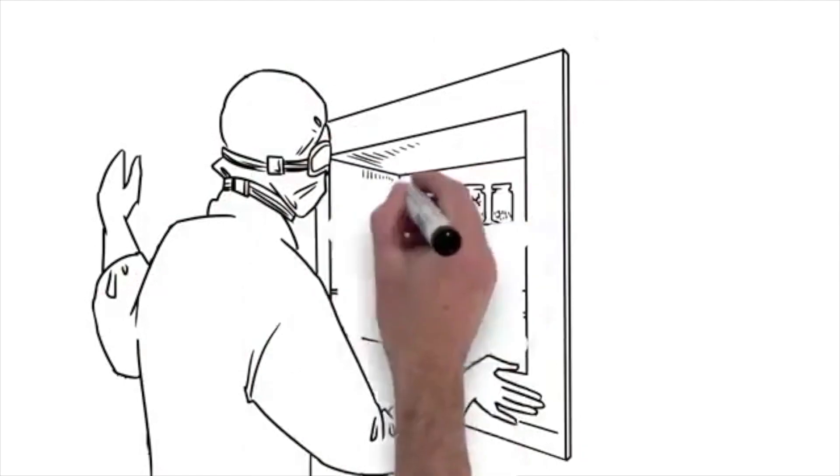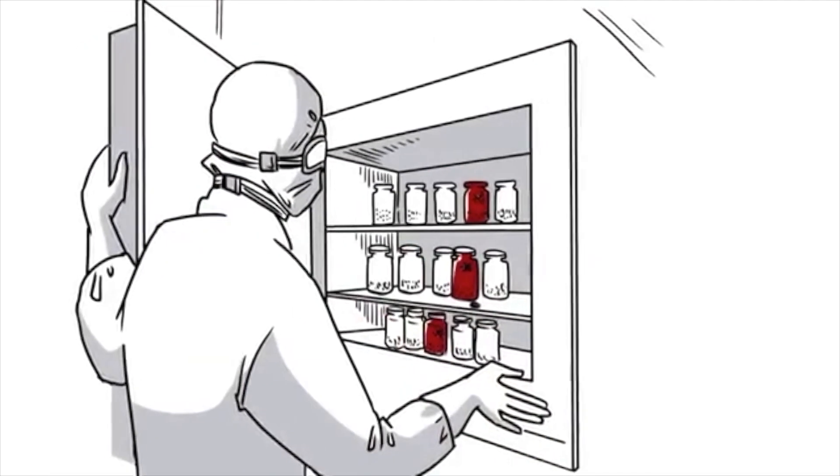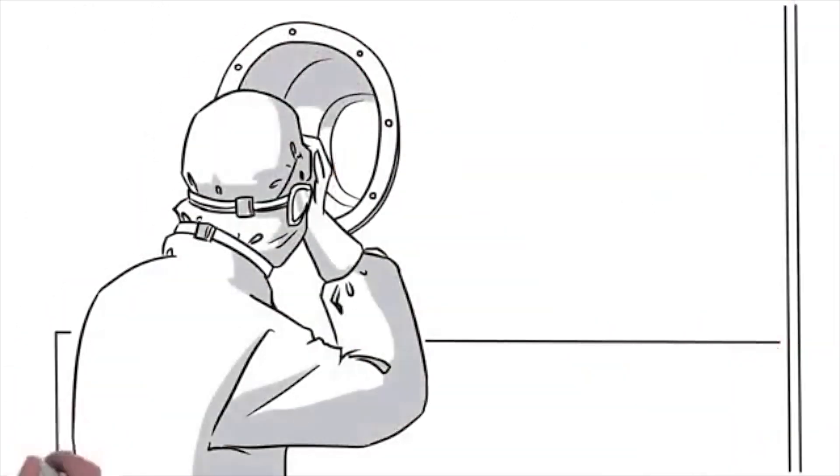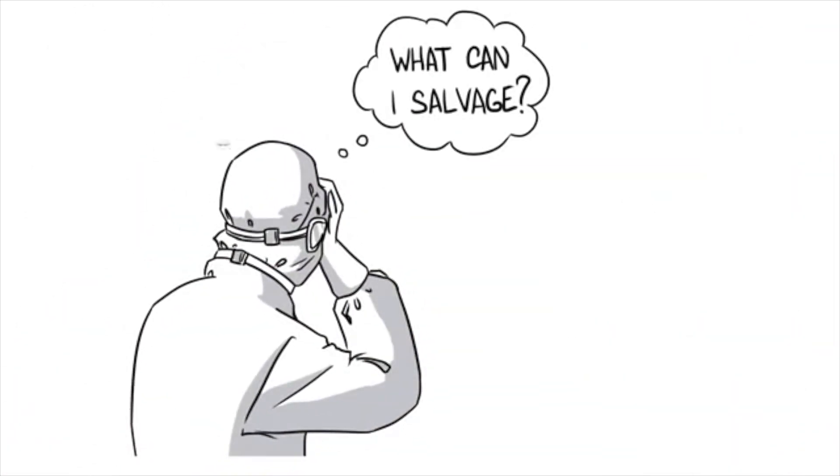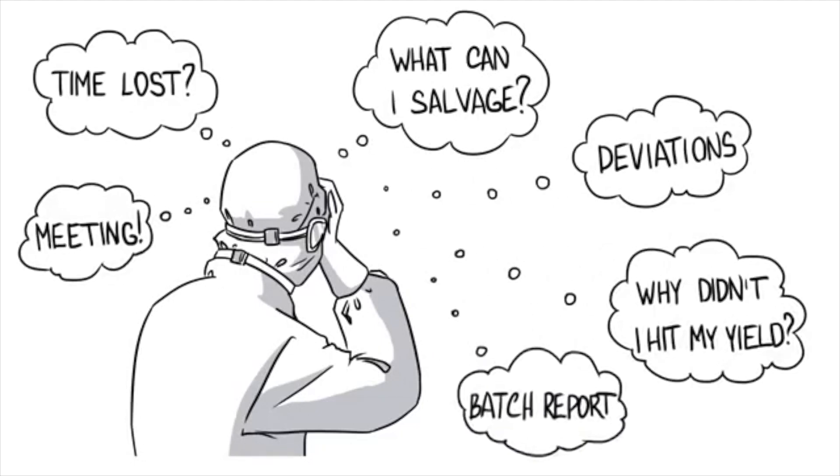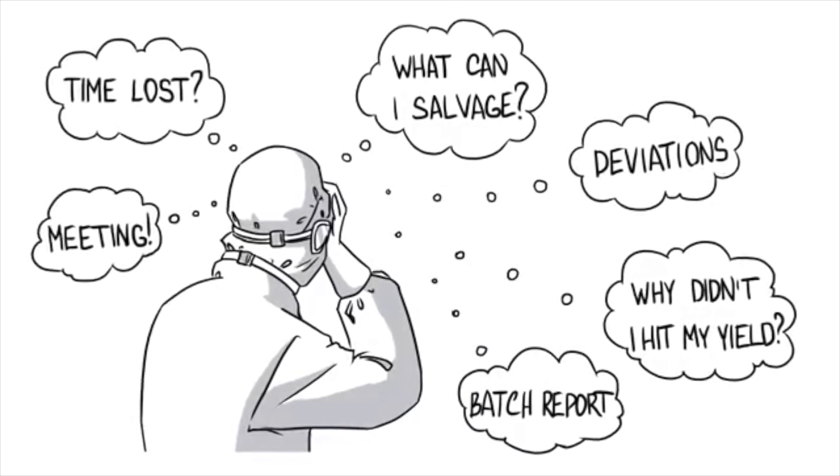Here's another challenge. Joe opens the freeze dryer after seven and a half days, only to find broken vials, sometimes as many as 20%. That's when Joe's head starts to spin. Are vials contaminated? How much time will I lose? Deviations, bottom line. Problems like this slow down production, cost money, and result in meetings.